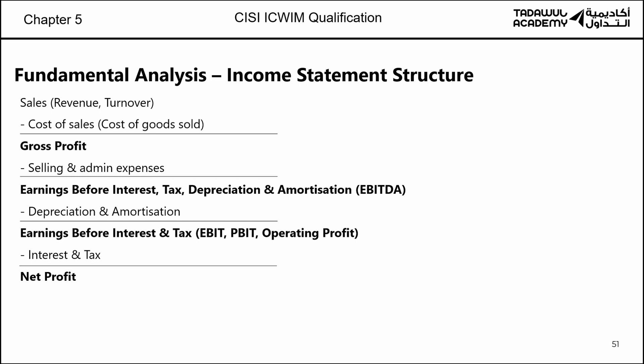Let's look quickly at the income statement. CISI loves to ask about the different types of profits. Most of you know gross profit — sales minus cost of sales — and net profit, which is minus your expenses. But there are other types of profit. Gross profit minus selling and admin expenses gives you EBITDA: earnings before interest, tax, depreciation, and amortization. Once you remove depreciation and amortization, you're left with EBIT — sometimes called PBIT or Operating Profit. You will see any one of these three names in the exam.